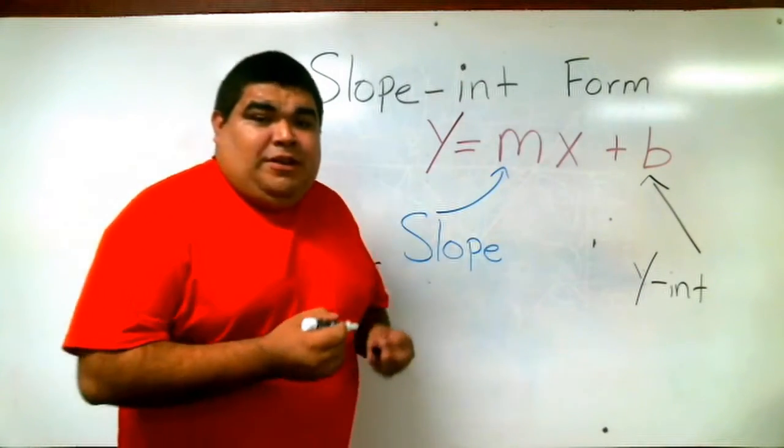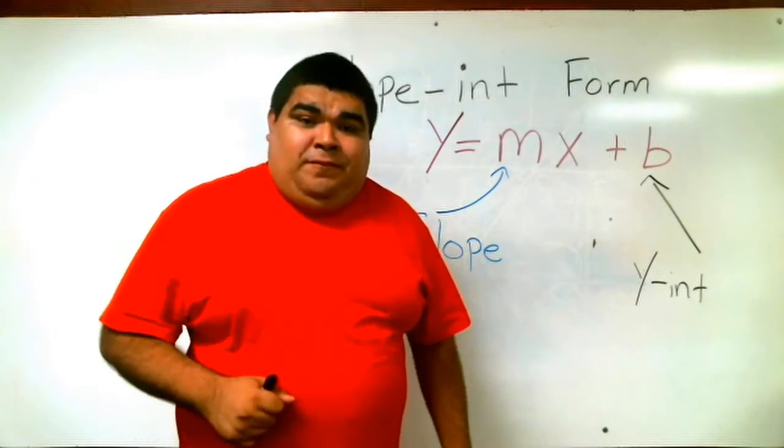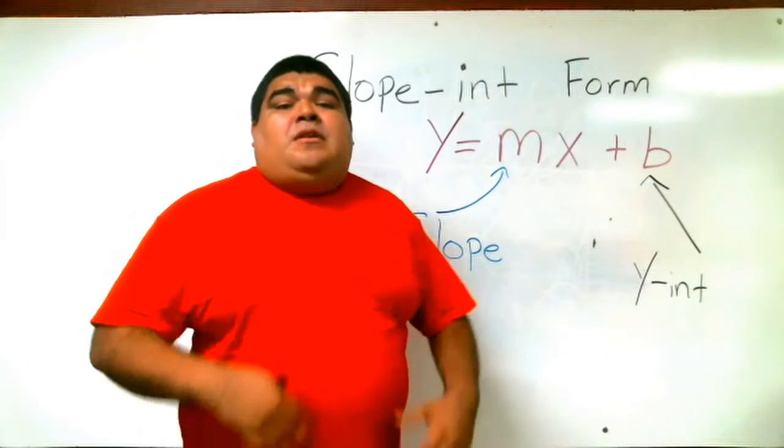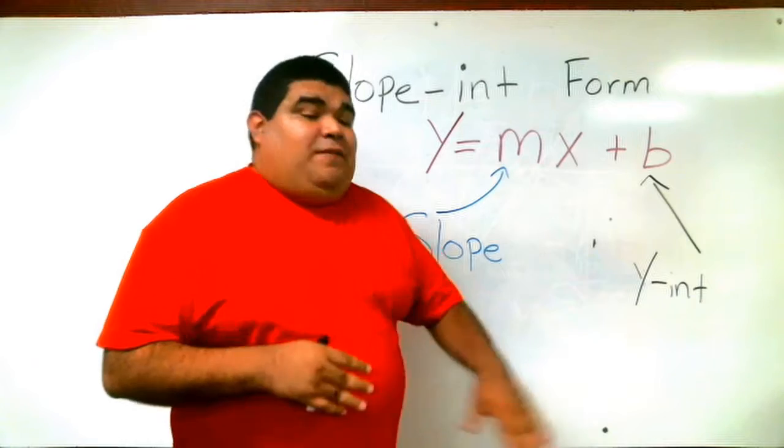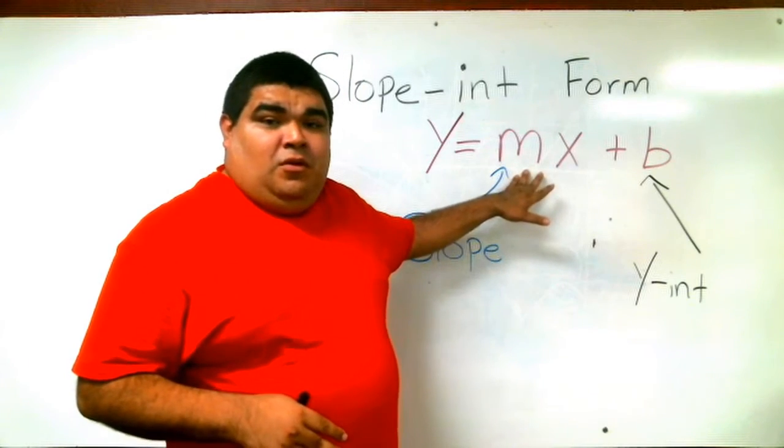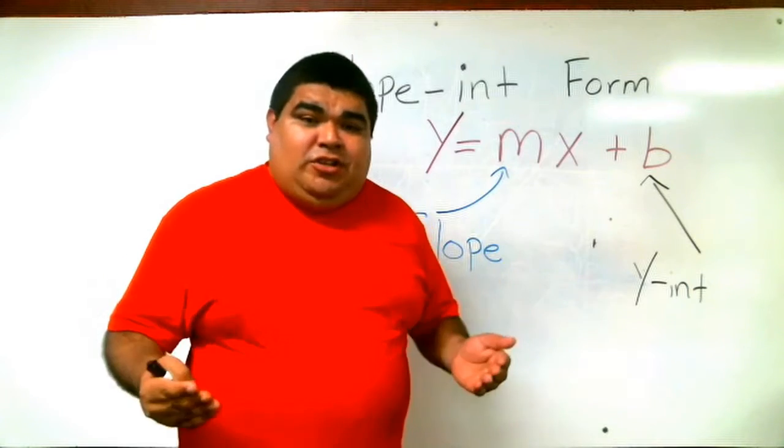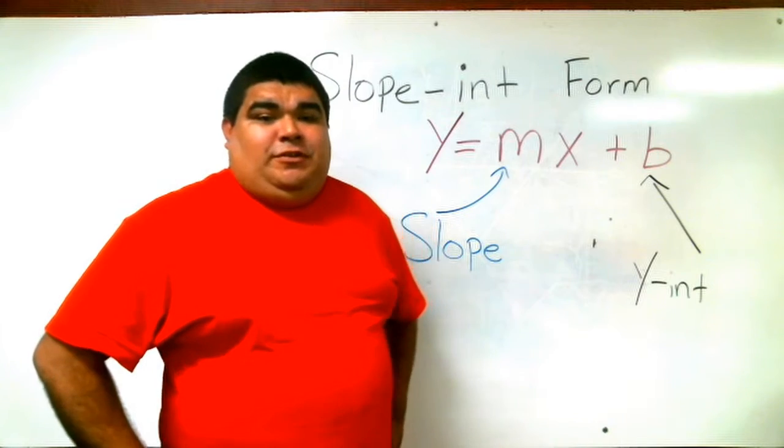We need to find the b in the equation in order to graph this formula. The way we're going to find it is, once we have the slope, we can use one of the coordinates from the equation to solve for b. So let's start on the example for today.